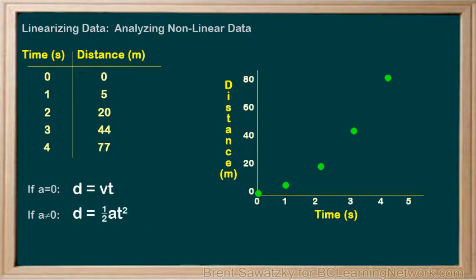This explains why we're not getting a linear graph. The relationship between d and t is not linear. Instead, the relationship is squared. Therefore, to make a nice linear graph, we should be graphing with t squared on the horizontal axis. Now we have a linear equation, y equals mx plus b.